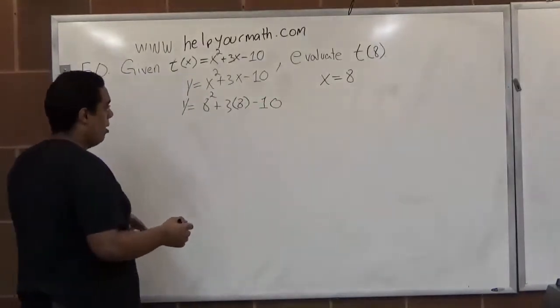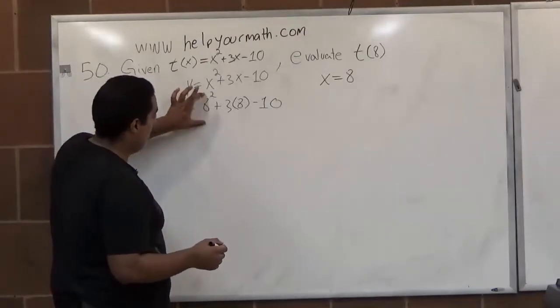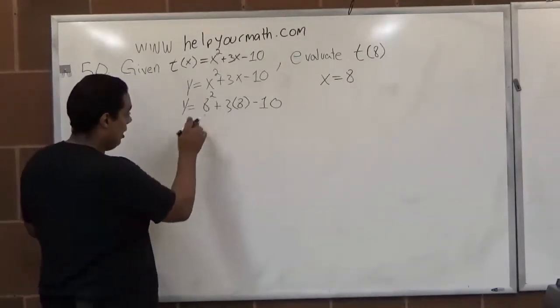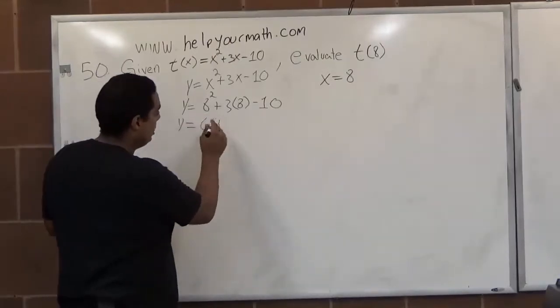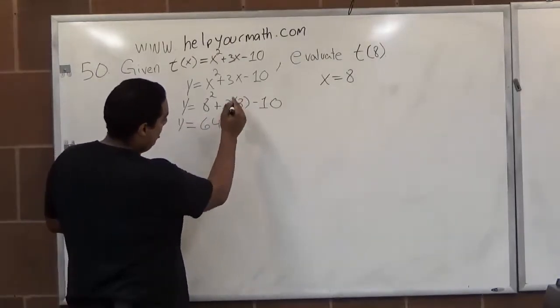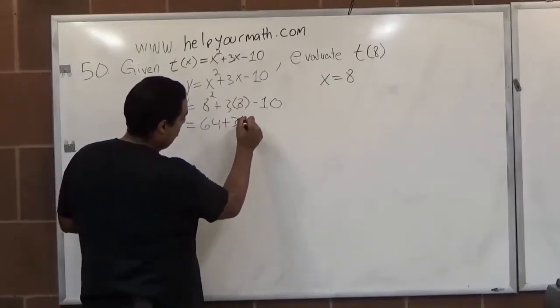Our order of operations means we do exponents first. So 8 squared is 8 times 8, which is 64. Y equals 64, and we can write this down.